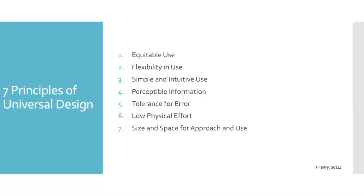There are seven principles of Universal Design. The first one is Equitable Use. This means providing the same means of use for all users, as well as ways to maintain privacy, security, and safety. It should be equally available to all users. Finally, it is important to make the design appealing to all users.